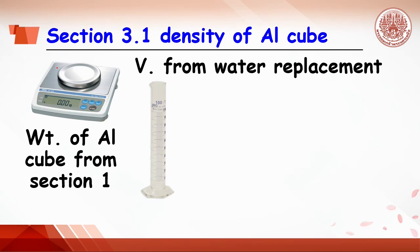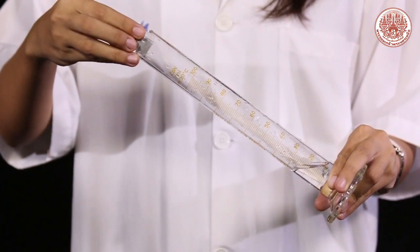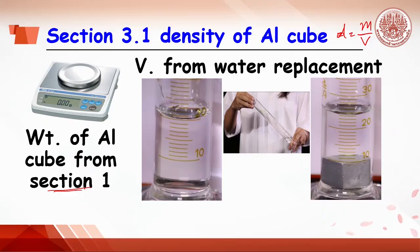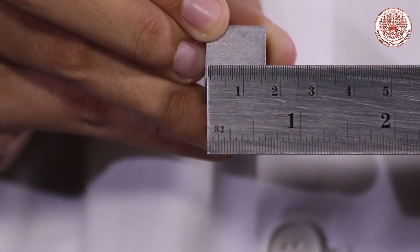In Section 3.1, the density of the cube equals mass divided by volume. The mass is obtained from Section 1. The volume can be determined by water displacement: fill a 100 ml cylinder with 20 ml of tap water, then place the aluminum cube in the cylinder and read the new exact volume. The difference in volume is the volume of the cube. Alternatively, since the aluminum cube is geometric, its volume can be calculated from width, length, and height.